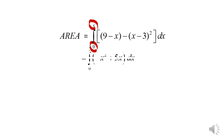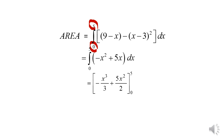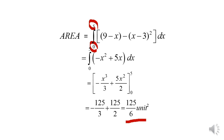Simplifying Example 6, the integral becomes the integration of (negative x² plus 5x) dx from 0 to 5. Integrating gives negative x³/3 plus 5x²/2 evaluated from 0 to 5, giving the answer 125/6 square units.